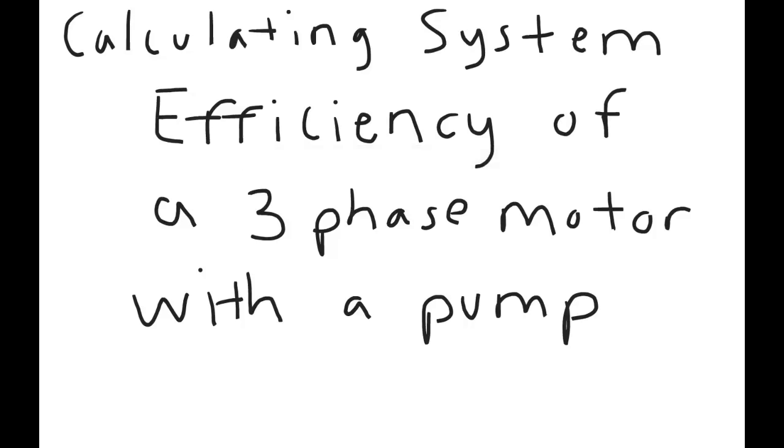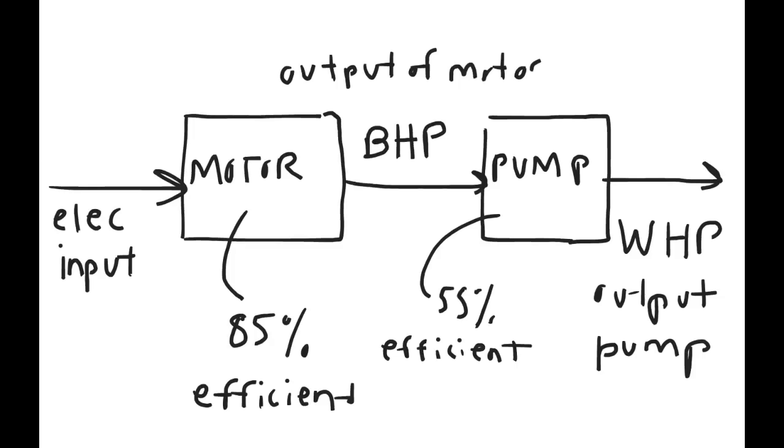I'm going to show you how to calculate the system efficiency of a three-phase motor with a pump. As you can see, we have a motor that is 85% efficient and a pump that is 55% efficient. The electric input going into the motor combined with the efficiency gives you the brake horsepower, the output of the motor, which goes into the pump. Multiply it by the efficiency, you have the water horsepower or the output of the pump.